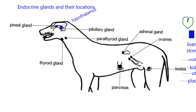Moving more caudally, we can talk about the thyroid gland, which is here in the neck — it's actually attached to the trachea. Then we have the parathyroid gland. This drawing shows some space between the two, but that's usually not the case; they would be kind of together in the same structure, though you can identify them separately.